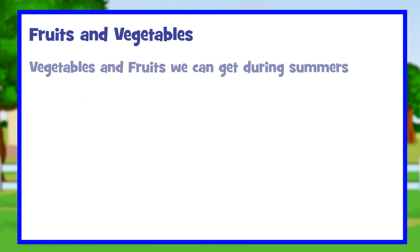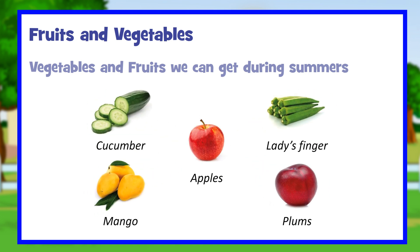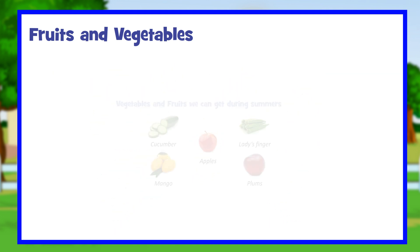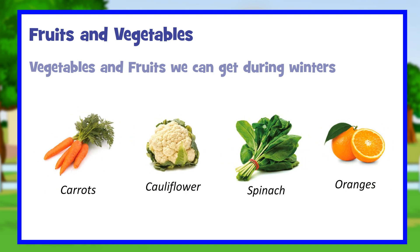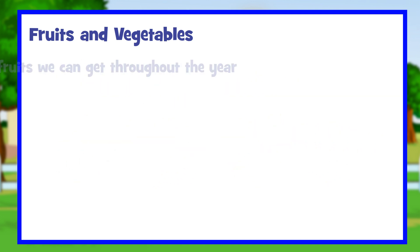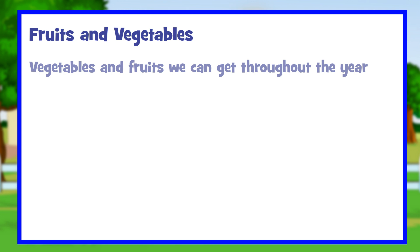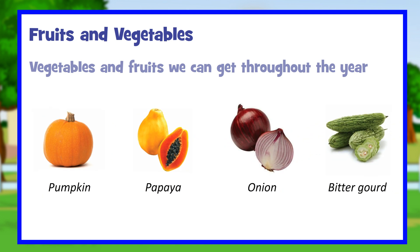Vegetables and fruits we can get during summers: cucumber, ladies finger, apples, mango, and plums. Vegetables and fruits we can get during winters: carrots, cauliflower, spinach, and oranges. Vegetables and fruits we can get throughout the year: pumpkin, papaya, onion, and bitter gourd.